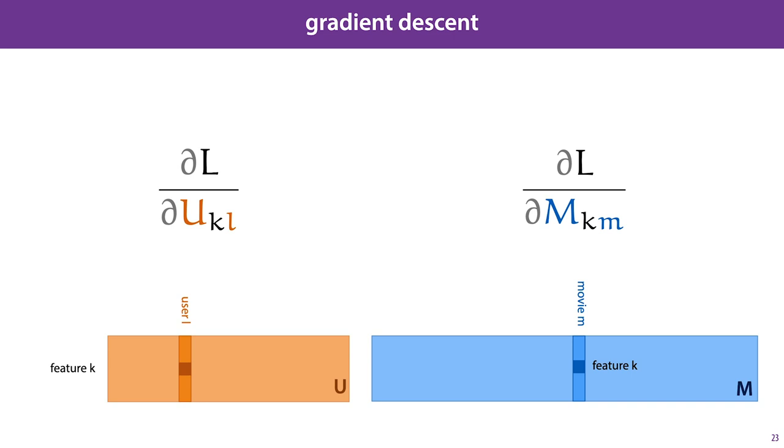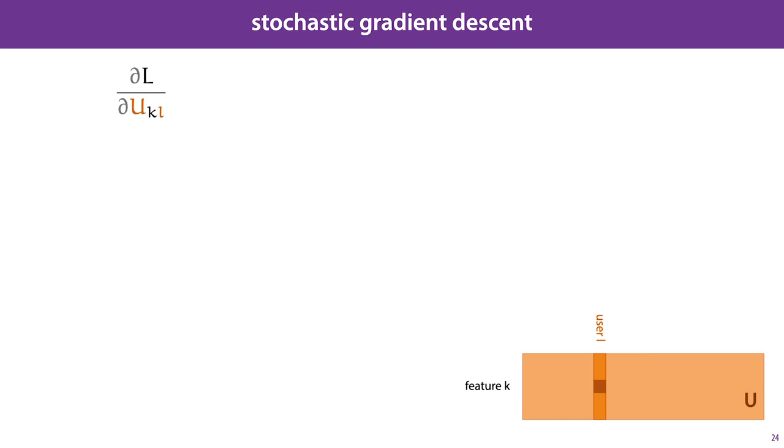To do this, these are the gradients we need to work out. Gradient of the loss L with respect to the kth embedding value of the embedding of user L, and the gradient of the loss L for the kth embedding of movie M. We'll start with the user embedding. First, we define a matrix E, which is the difference between all of our predictions and all of the known ratings. The total loss is then simply the sum over all squared elements of E, or only over those squared elements of E for which we know the true rating.